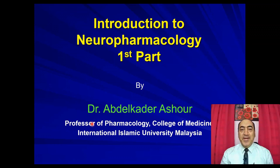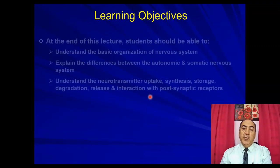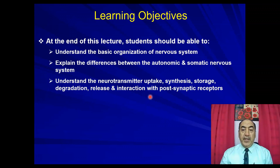Hello everybody, this is Dr. Abdelkader Ashour. Today we are going to start a new series of videos about neuropharmacology. We'll start first with an introduction to neuropharmacology, where we will discuss the basic organization of the nervous system, explain the difference between autonomic and somatic nervous system, and understand neurotransmitter uptake, synthesis, storage, degradation, release, and interaction with post-synaptic receptors.